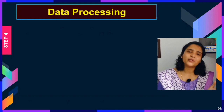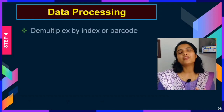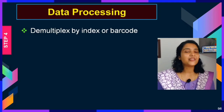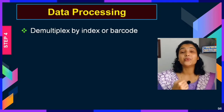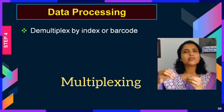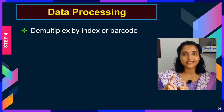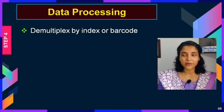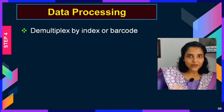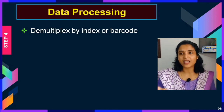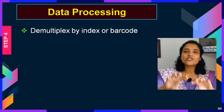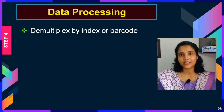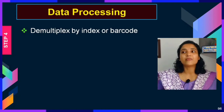In data pre-processing, the first step is demultiplexing by index or barcode. NGS is a high-throughput sequencing method where you can pool different samples together using multiplexing — each sample is assigned a particular tag or barcode. At the end of sequencing you need to demultiplex, categorizing which read belongs to which experiment. The first step in data processing is to assign each read to each sample from each experiment.